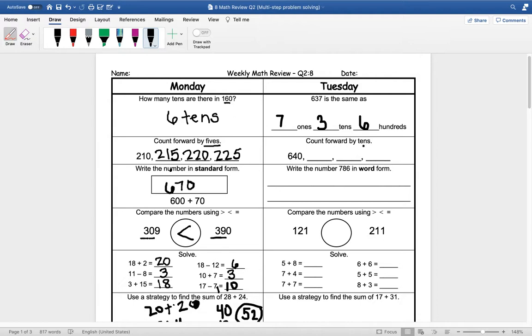All right, counting forward by tens. This time we're counting forward by tens. So starting with 640, our next number would be 650, then 660, and then 670.